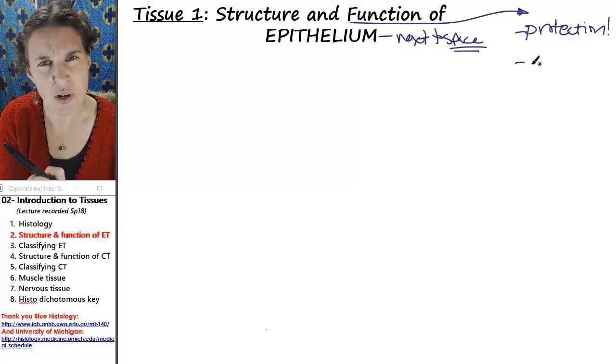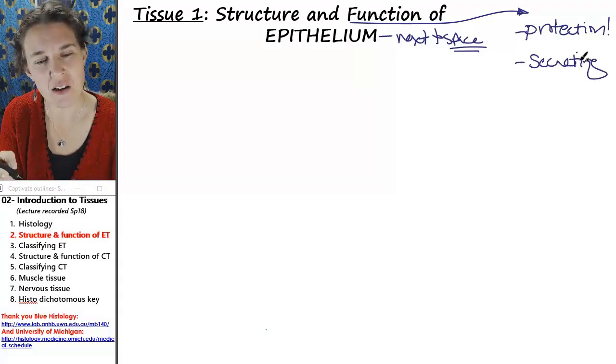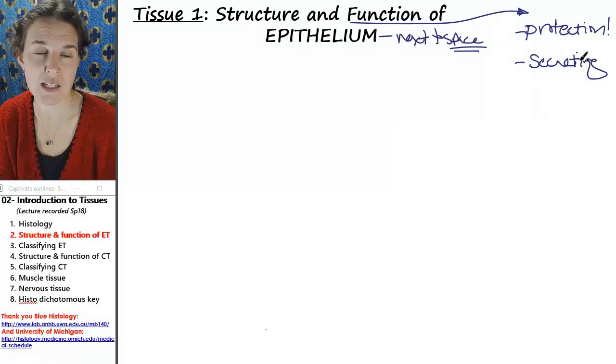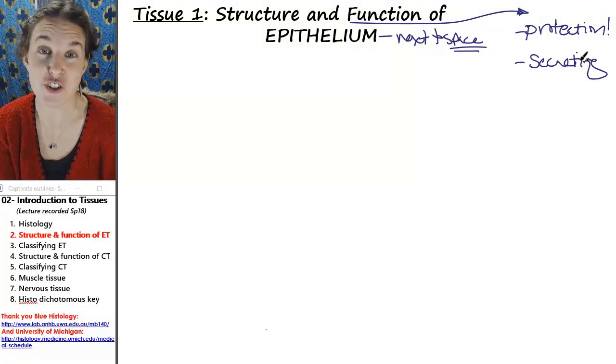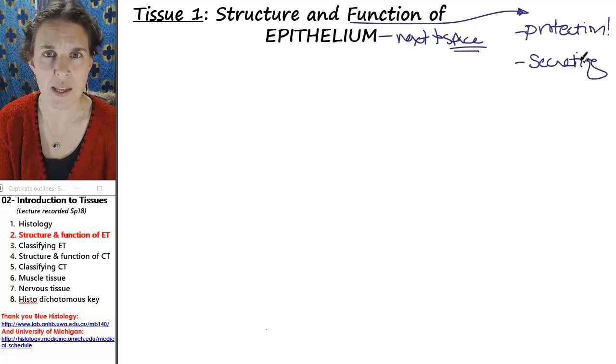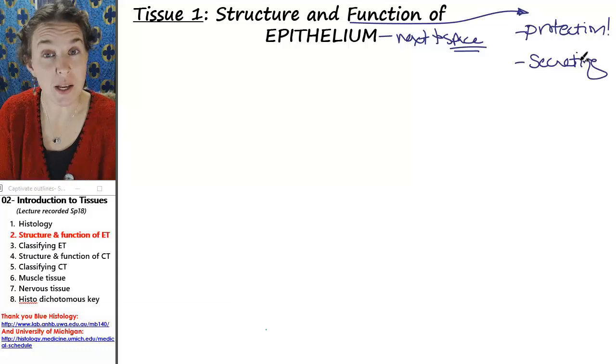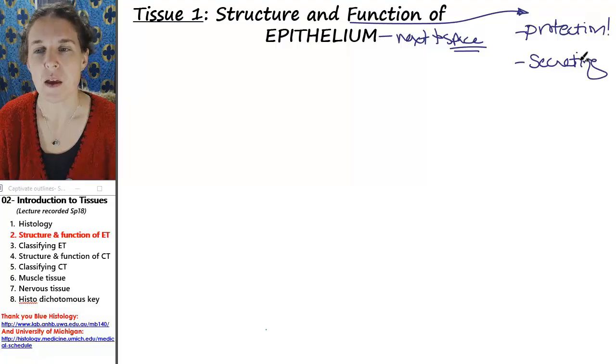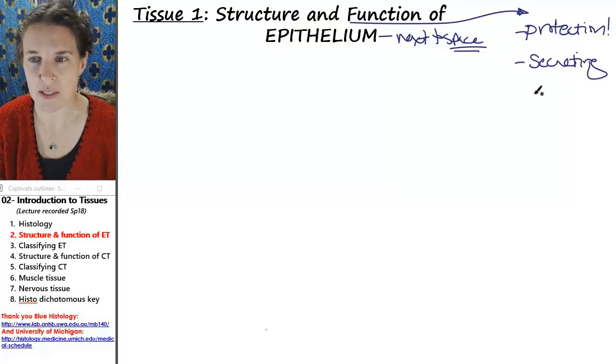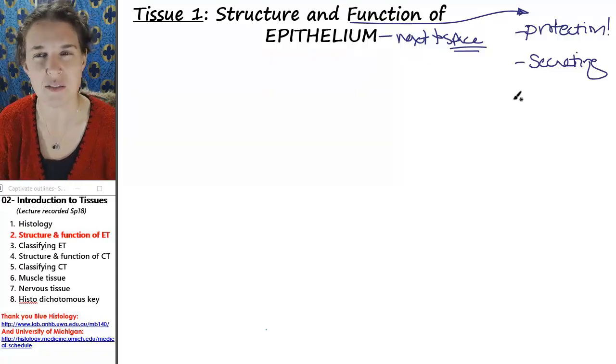Epithelium is also a tissue that is really good at secreting stuff. And if you think about the kinds of structures that secrete, glands secrete stuff. For example, sweat glands in your skin secrete sweat, and it's epithelial tissue that makes up that sweat gland, and the epithelial cells are actually doing the work of producing the sweat. When a cell produces something and then barfs it into the space that it is lining, that's the process of secretion.